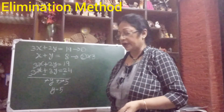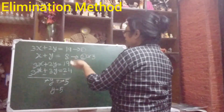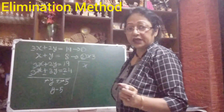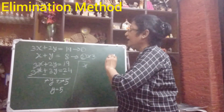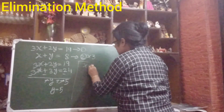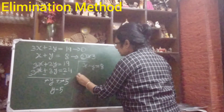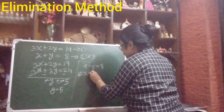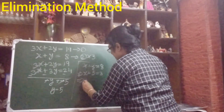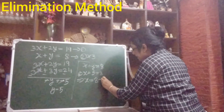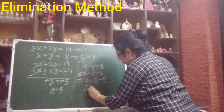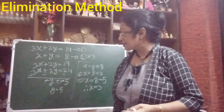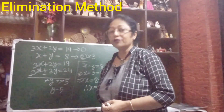The value of y we got is 5. Now, same as before, you put it in equation number 2 — it is comparatively small. So put this: equation number 2 is x plus y equals to 8. We are going to find the value of x, so y equals to 5 gives us x plus 5 equals to 8, which implies x equals to 8 minus 5. Therefore, the value of x equals to 3. So our value of x is 3 and the value of y is 5 — we got the values of both variables.